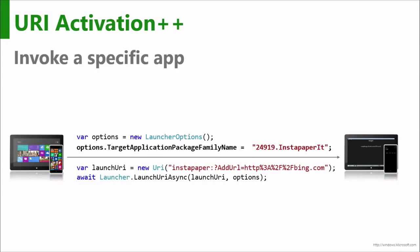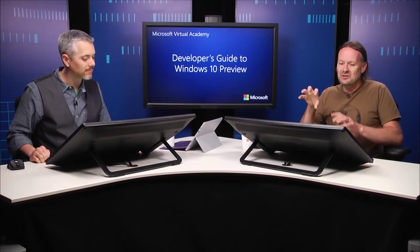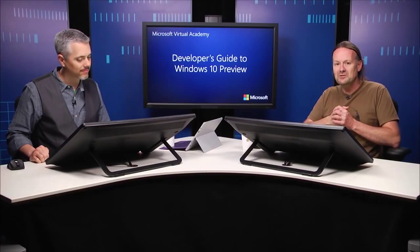You use that name in your LauncherOptions object and then simply call LaunchUriAsync — exactly the same as before — passing the URI but also the options object. It's an optional parameter. You can also send a file token: you fetch a token for a file, include it in a value set, and pass that as a third parameter alongside the URI and options. This is a whole value set you get to send across — a key-value dictionary, about 100 kilobytes max. The value set is a new type from 8.1, a string-object dictionary where objects need to be serializable, and it's a valuable way of passing structured data between apps.